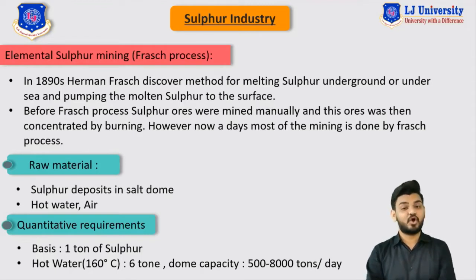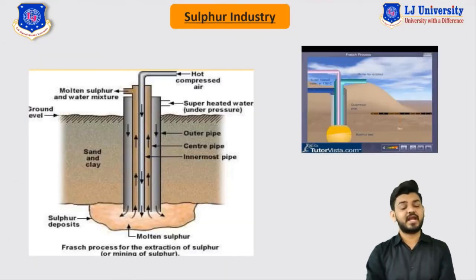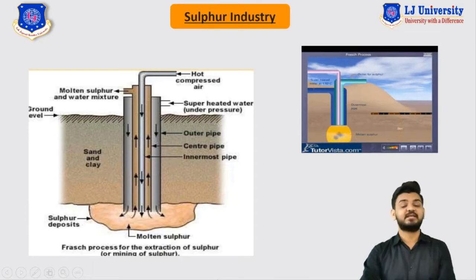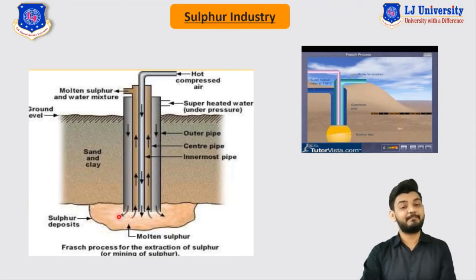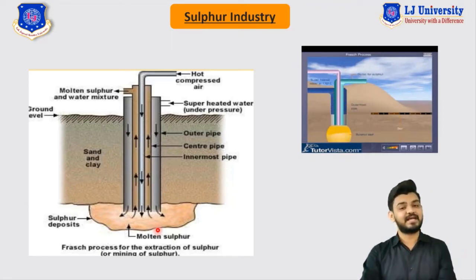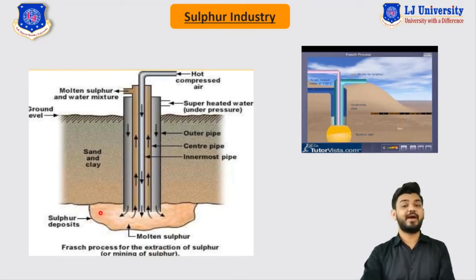Let me show you the concept behind the Frasch process so you understand how sulphur is actually extracted. To extract sulphur, we utilize three concentric cylindrical tubes. In this image and animation you can see the working principle of the process. Deep in the earth's crust, a few hundred meters down, there is a sulphur deposit or sulphur dome — shown here as the yellow section. To extract sulphur from this dome, we inject one concentric cylinder that passes hot water into it.